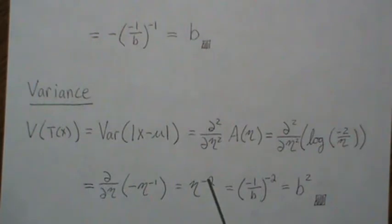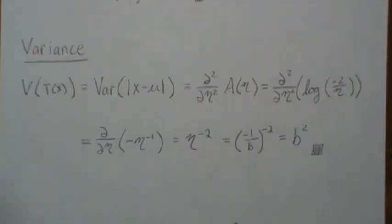The derivative of this is this. Stick in what we know for eta, which is minus 1 over b. Solve that, and we get b squared. So that's the variance of our sufficient statistic.